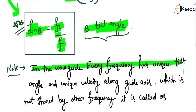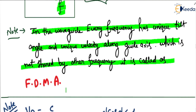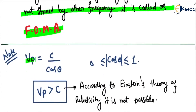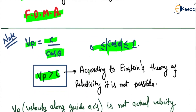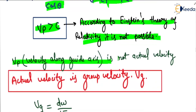Theta is the tilt angle. In a waveguide, every frequency has a unique tilt angle and unique velocity along the guide axis, which is not shared by other frequencies — this is called FDMA, frequency division multiple access. Since vp equals c/cos θ and the modulus of cos θ varies from 0 to 1, we observe that vp is greater than c. But according to Einstein's relativity theory, this is not possible. Actually, vp along the guide axis is not the actual velocity.